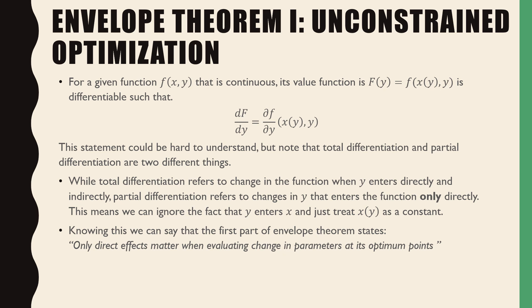This statement could be hard to understand, but note that total differentiation and partial differentiation are two different things. While total differentiation refers to changes in a function when y enters directly and indirectly, partial differentiation only refers to changes in y which enter the function only directly. This means we can ignore the fact that y enters x and just treat x as a constant.